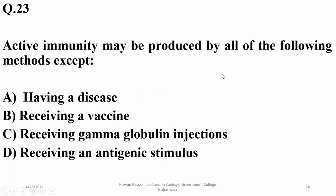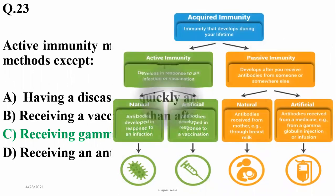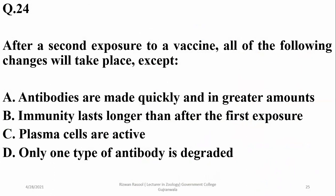Question 23: active immunity may be produced by all of the following except injection of antibodies, which is a type of passive immunity. Having a disease, receiving a vaccine, or receiving an antigenic stimulus may all provide active immunity. Question 24: after second exposure to a vaccine, antibodies are made more quickly, immunity lasts longer, and plasma cells are active — but no type of antibody is degraded, making that the irrelevant option.